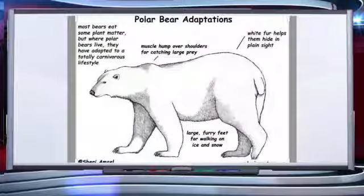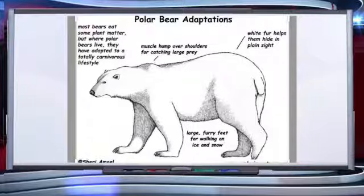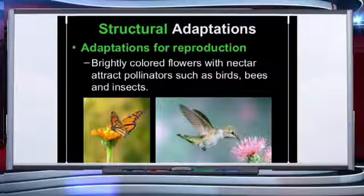Now let's talk about polar bear adaptations. Polar bears live in extremely cold conditions. Their white fur helps them hide in plain sight. They have a thick layer of blubber which works as an insulating layer, protecting them from the freezing cold. The feet of the polar bear are furry and large so that they can easily walk on ice and snow.